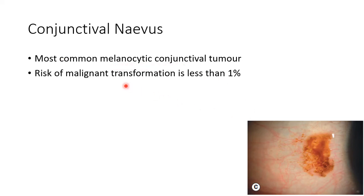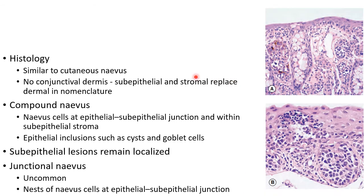The risk of malignant transformation in conjunctival nevus is less than 1%. The histology of conjunctival nevus is similar to cutaneous nevus; however, there is no dermis in the conjunctiva, so sub-epithelial and stromal replace dermal in the nomenclature of conjunctival nevus.